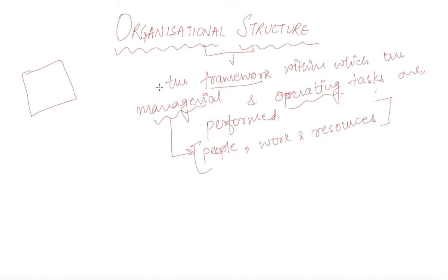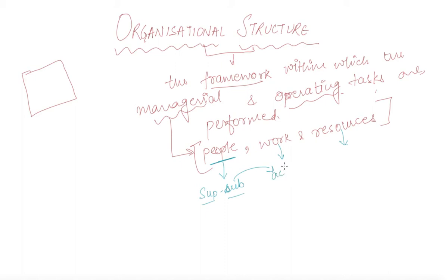If we will talk about organizational structure, that is the framework within which the organization performs its activities, it comprises of three things. First is the people, which says that the superior and subordinate relationship is defined as per organizational structure. The work, that is what kind of activities the organization is required to perform. And as per resources, it means which department or which structure of the organization requires what kind of resources.